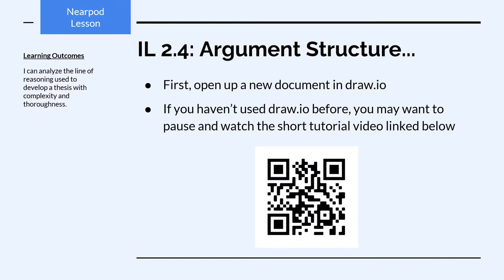The first thing you need to do before we can start mapping the argument is open up a new drawing in draw.io. You can do this on paper if you'd prefer, but using draw.io will allow you to move things around very easily — we're going to construct this argument map in pieces and then piece them together. If you haven't used draw.io before, now may be the time to watch the tutorial video I've linked. Pause the lesson and watch that short tutorial, which shows you the basics of creating a new document, creating boxes, and linking them together.